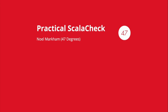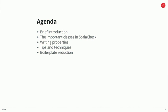So it's going to go over the basics of ScalaCheck, show you how to use it, and then hopefully show a few ways of thinking and approaches to getting the best out of the library. Here's what we're going to talk about today. I'm going to talk about what ScalaCheck is, the key classes that people find in ScalaCheck, and then writing properties — that's where I'm going to spend most of the time. We'll finish off with a few tips and techniques, and then finally my favorite thing, which is boilerplate reduction.